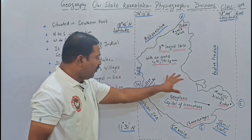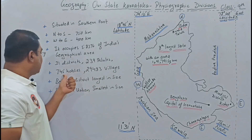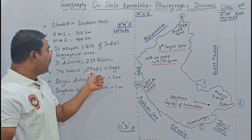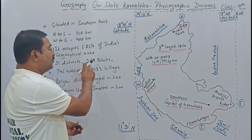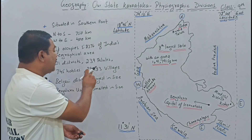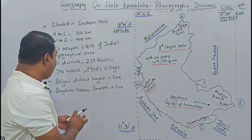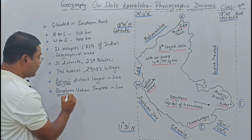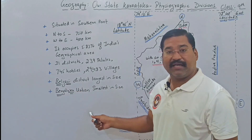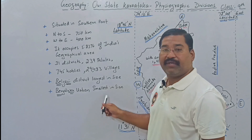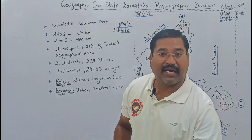Karnataka has 31 districts, 239 taluks, 745 hoblis, and 29,483 villages. Among these, Belagavi district is the largest in size, while Bangalore Urban is the smallest district in size.